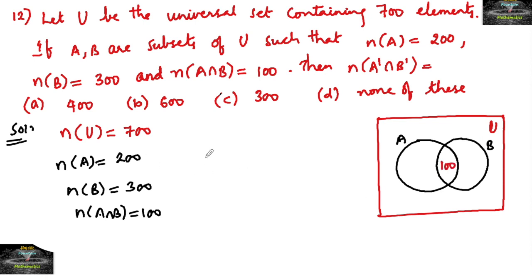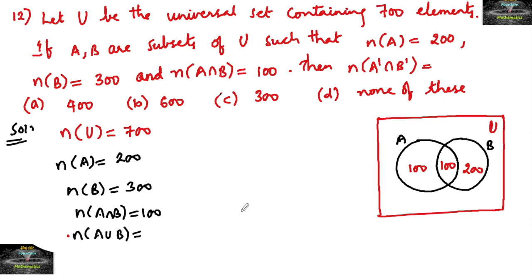Since n(A) = 200, the remaining part (only A) will be 100, and n(B) = 300, so the remaining part (only B) is 200. So from the Venn diagram we can write n(A ∪ B) = 100 + 100 + 200 = 400.